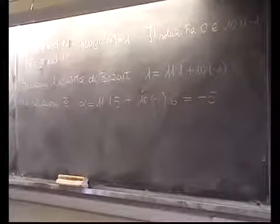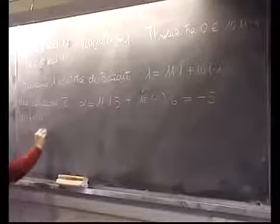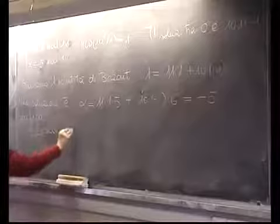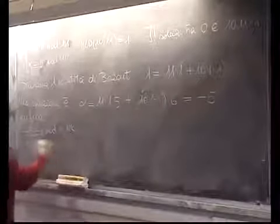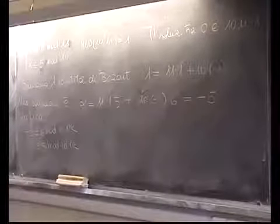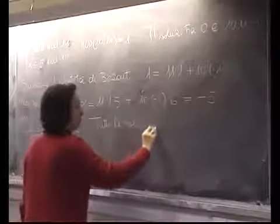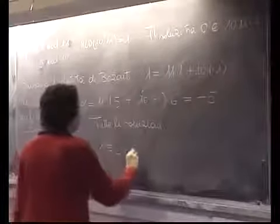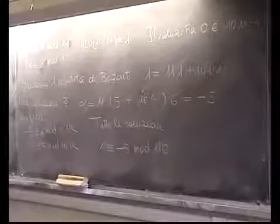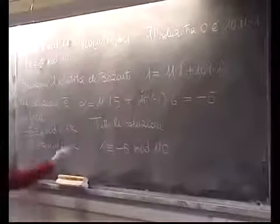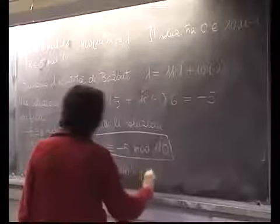Verifica: −5 ≡ 6 (mod 11) è giusta e −5 ≡ 5 (mod 10) è giusta. Tutte le soluzioni: x ≡ −5 (mod 110). Oppure, scritte come insieme: {−5 + 110t | t ∈ ℤ}. Questa è una macchinetta.